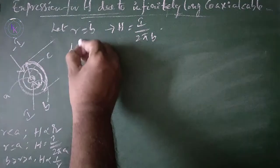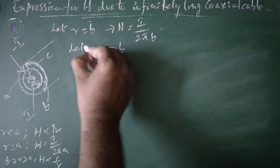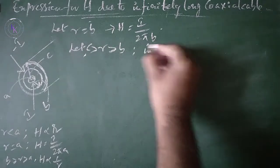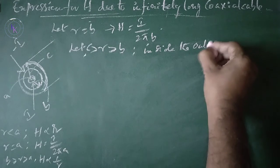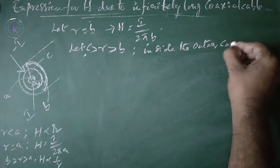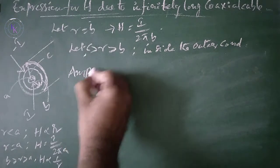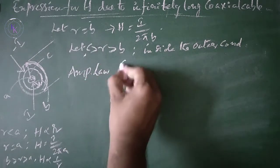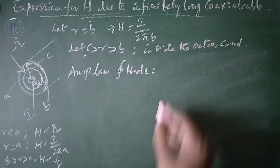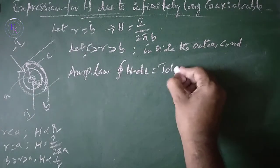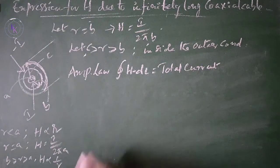For the region where r is greater than b and less than c, which is inside the outer conductor, we apply Ampere's law: the closed integral of H dot dL equals the total current enclosed.